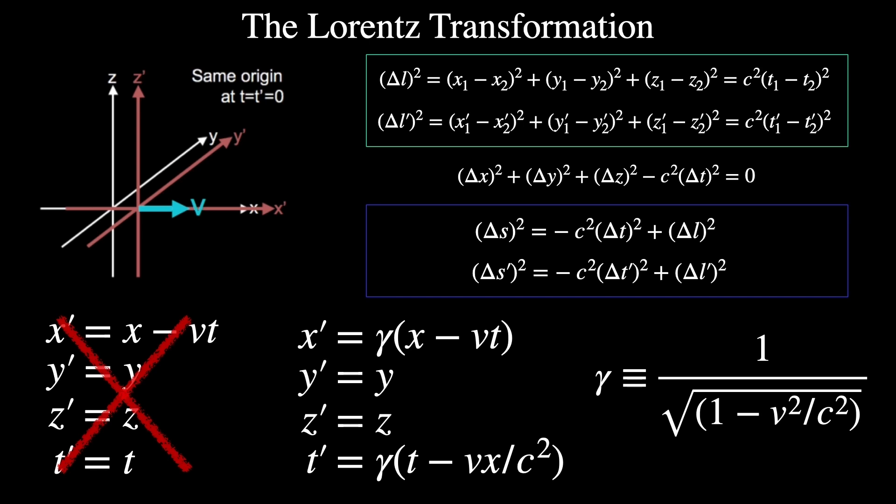They all hunted for the transformation between two reference frames where Maxwell's equations were invariant, that is, where you didn't have to modify the form of the equations for any relative motions. They found what was called the Lorentz transformation, shown here, but their combined goal was to preserve the ether's existence.